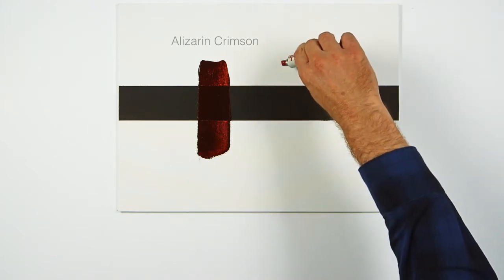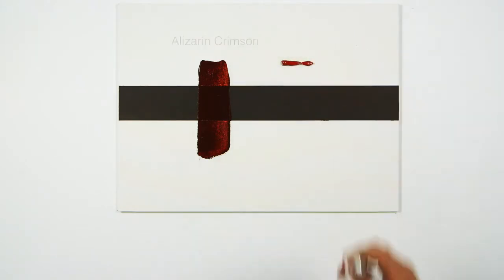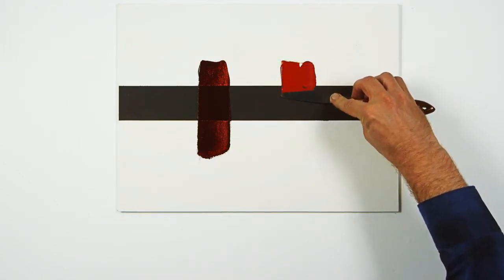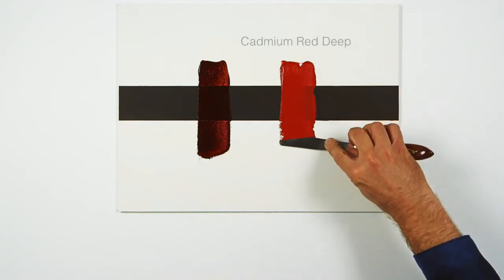Opacity of colour is the result of light hitting the paint film and being reflected back. Here, the white of the canvas and the black stripe are totally obscured by this layer of cadmium red deep.